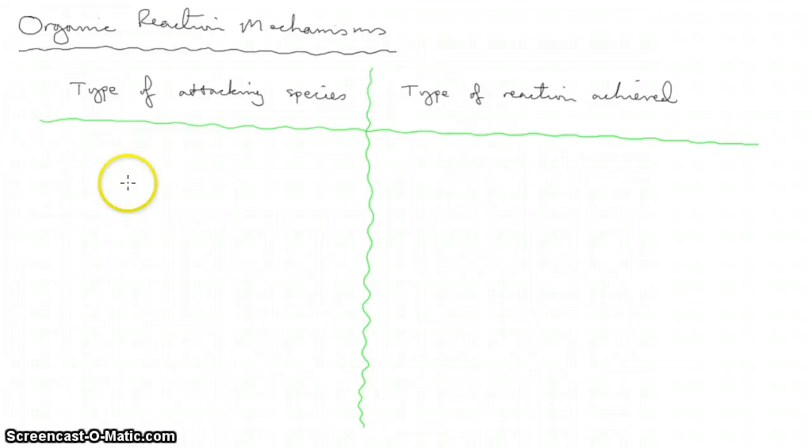This is a video summarizing the different categories of organic reaction mechanisms at A-level chemistry. These are named with two parts. The first part, which is optional, is what sort of attacking species is present. The second half of the name, which is compulsory, is what type of reaction is actually achieved—what change comes to the organic molecule.